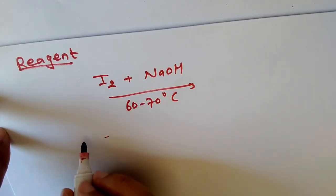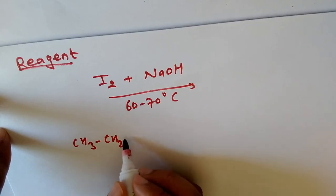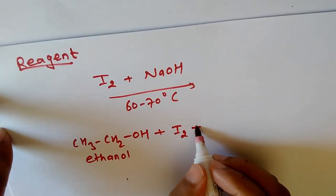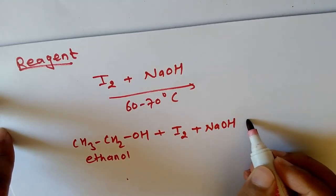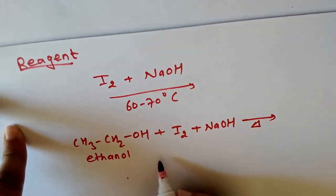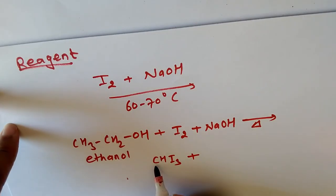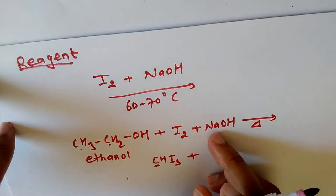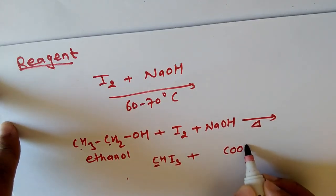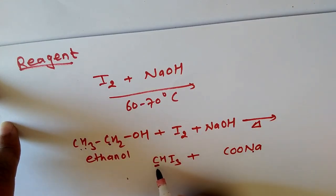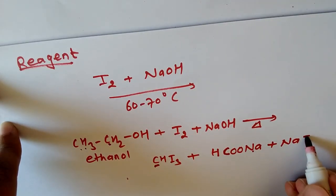Let us write the chemical reaction. CH3CH2OH (ethanol) reacts with I2 plus NaOH in the presence of heat to give Iodoform (CHI3). Ethanol has two carbons, so the other product is the sodium salt of a carboxylic acid — HCOONa (sodium methanoate) — plus NaI plus H2O.